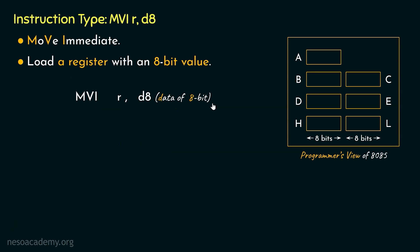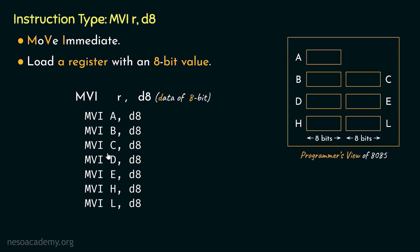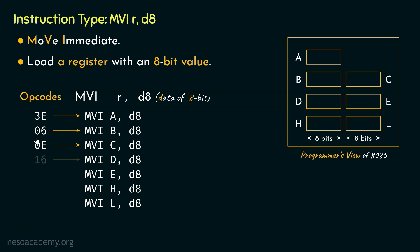Now this is the instruction type. What are the different instructions? They are MVI A,D8 — MVI B,D8 — MVI C,D8 — MVI D,D8 — MVI E,D8 — MVI H,D8 — and MVI L,D8. Whenever we execute any one of these instructions, the 8-bit data mentioned within the instruction itself will be moved immediately into that particular register. So we have 7 different instructions here. The opcodes for these mnemonics are: 3E, 06, 0E, 16, 1E, 26, and 2E.